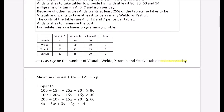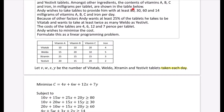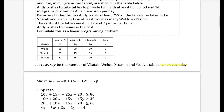I've done some of these constraints here already. The objective is minimizing cost, with the coefficients coming from the cost values. Andy wishes to have at least 80 milligrams of vitamin A: from VitaTab he gets 10 milligrams, 15 from Weldo, 25 from Ekstermin, and 20 from Yestervit, giving 10V + 15W + 25X + 20Y ≥ 80. Similarly, the coefficients for vitamin B are 10, 20, 15, and 15, needing 30 milligrams; vitamin C uses 20, 10, 15, and 20, needing 60; and iron needs 14 milligrams.